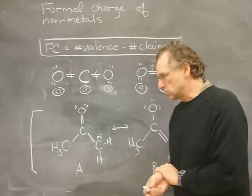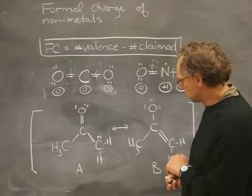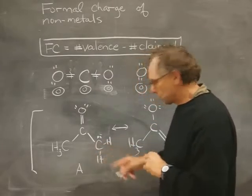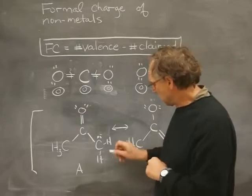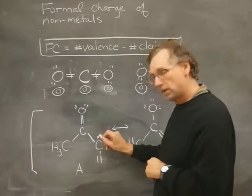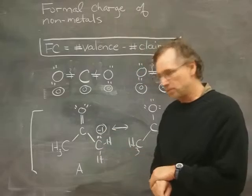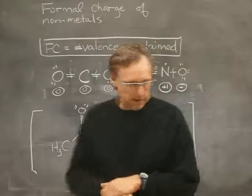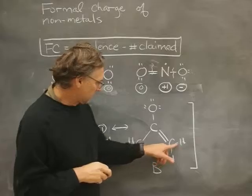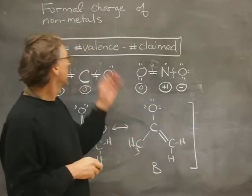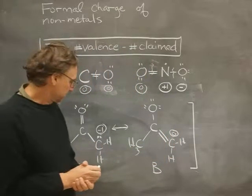Sometimes you have resonance structures — alternate resonance structures — and the formal charges can change according to where you put the electrons. Let's focus on this carbon. Carbon has a valence of four. How many is this carbon claiming? One for that bond, two, three, four, five. So four minus five is -1 on that carbon. Now this other carbon in the alternate resonance structure is claiming one, two, three, four, with a valence of four minus four. So this carbon has a formal charge of zero.